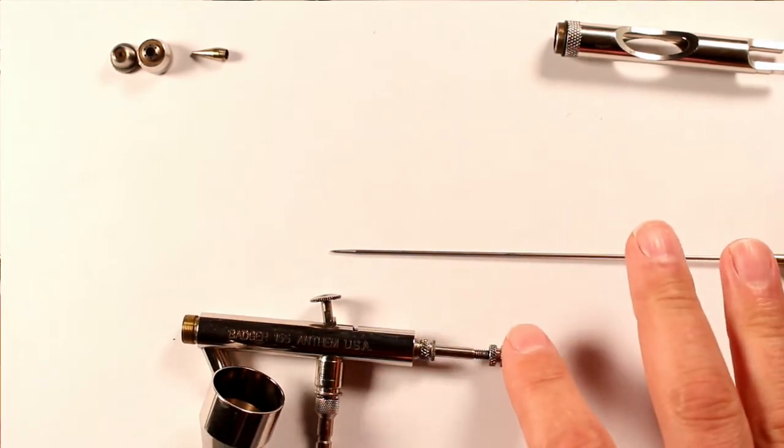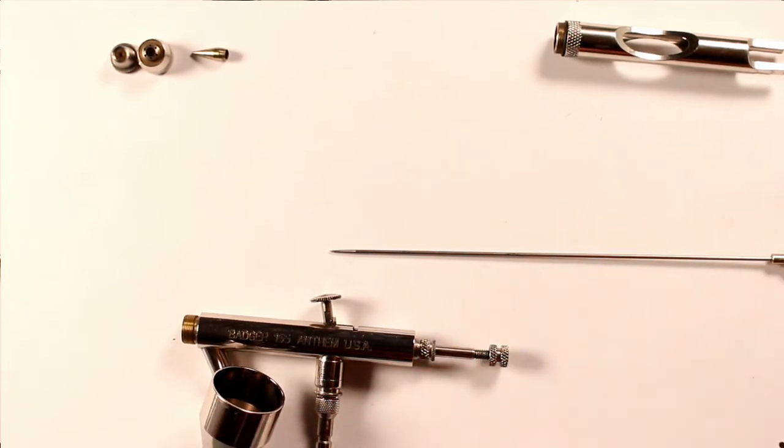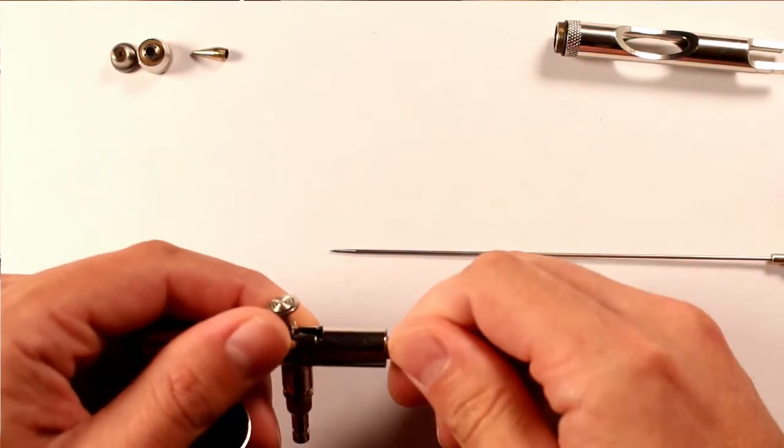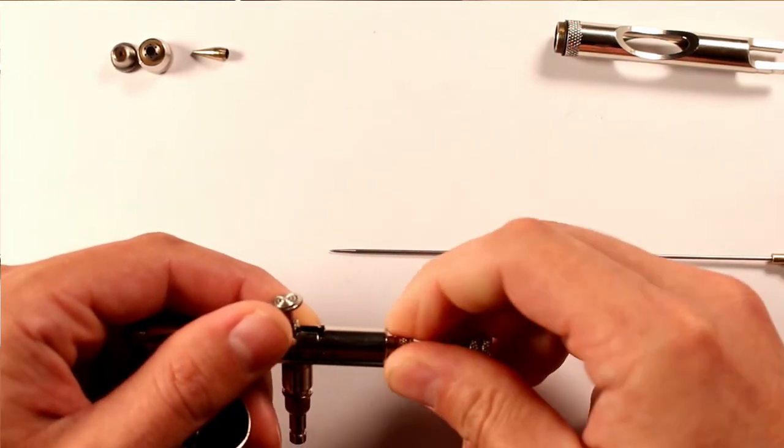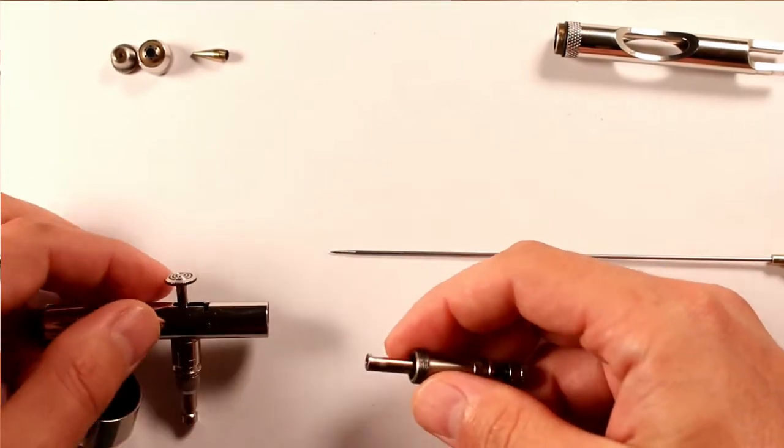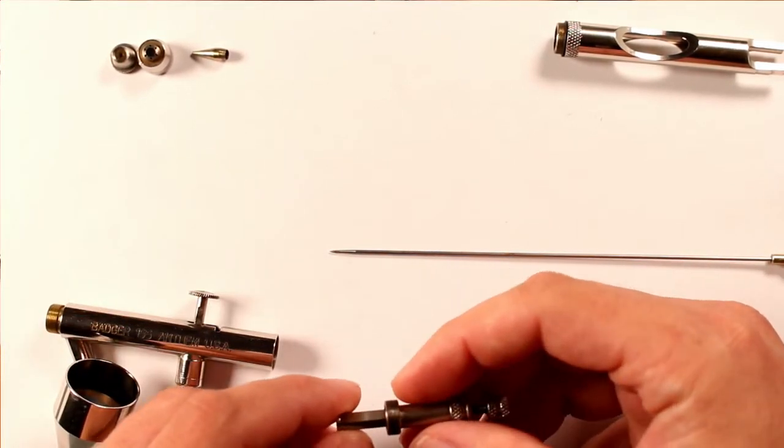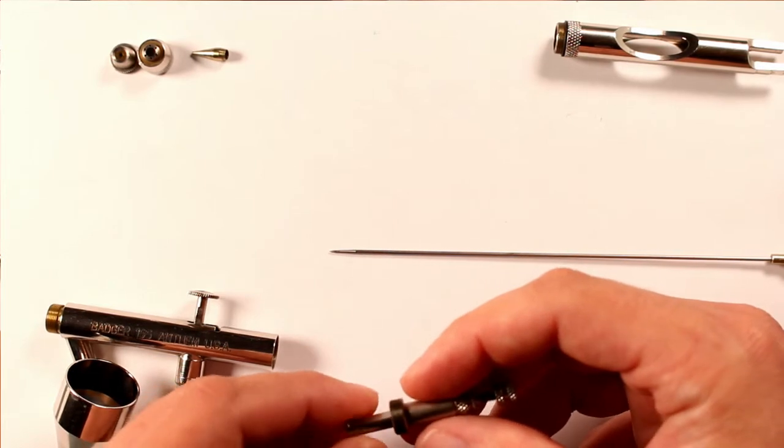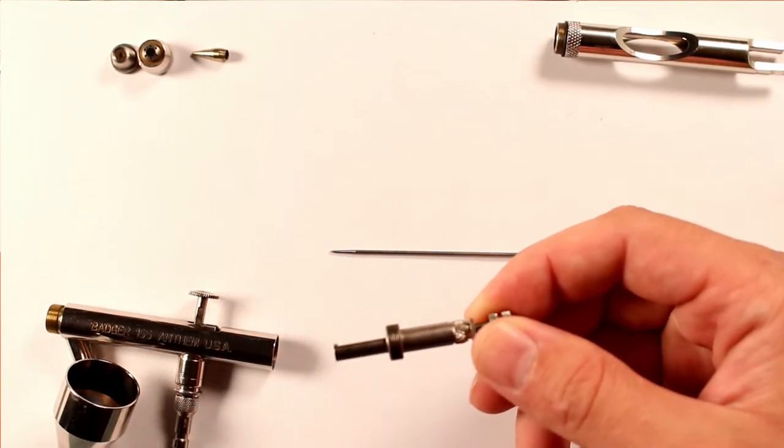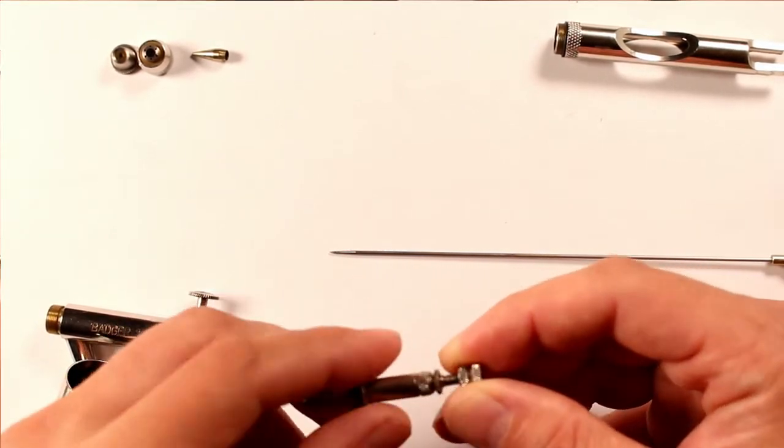All right, then we're going to take off the entire tube shank and then we're going to disassemble that as we continue. So we're going to unscrew it from the back. And then inside of this is going to be the needle tube, which is right here. But we can't actually take that off until we remove the needle chuck.